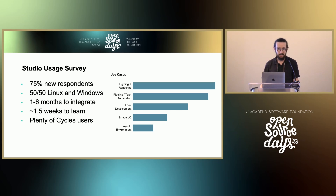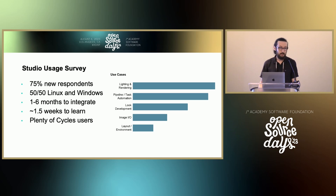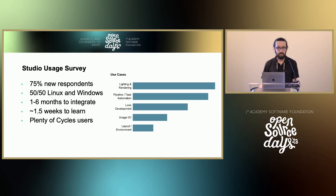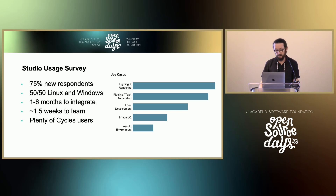Artists take about a week and a half on average to get up to speed and productive. There's an interesting mix of use cases, from studios using Gaffer for lighting and rendering, through to pipeline automation, look development, image IO, and some even using Gaffer for layout and environment work. Plus there seem to be plenty of Cycles users out there — the combination of Gaffer and Cycles seems to be a compelling one for smaller studios.